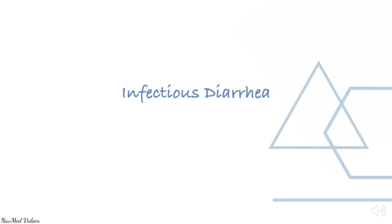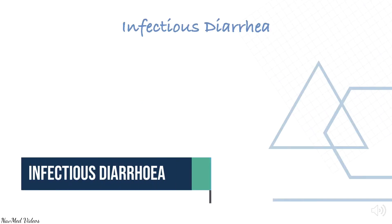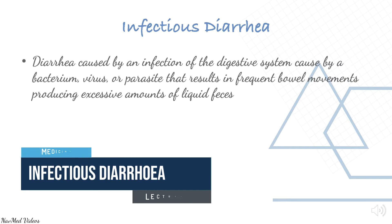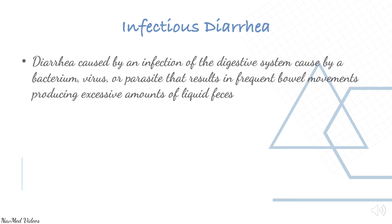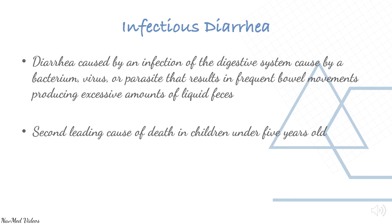Next topic is infectious diarrhea — diarrhea caused by an infection of the digestive system caused by bacteria, virus, or a parasite — that results in frequent bowel movements producing excessive amounts of liquid feces. It is the second leading cause of death in children under five years old.